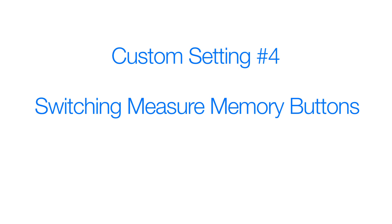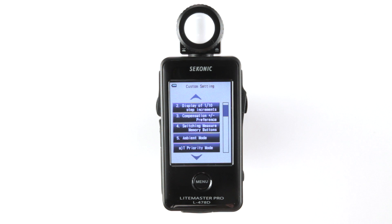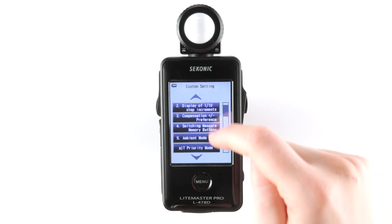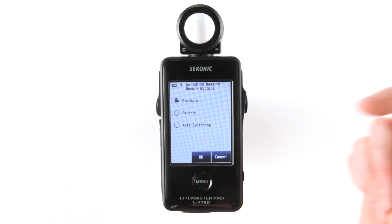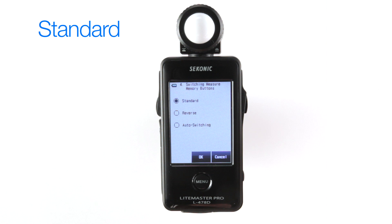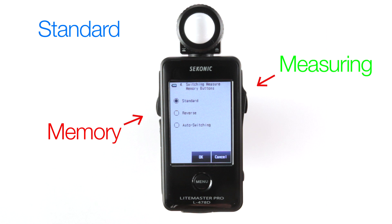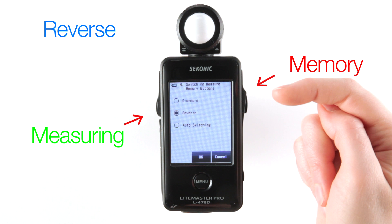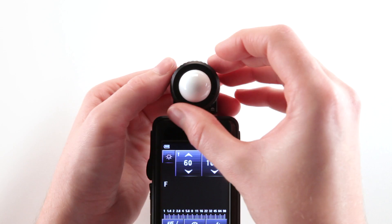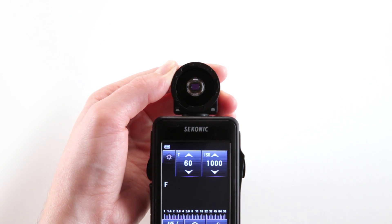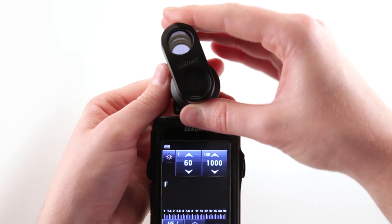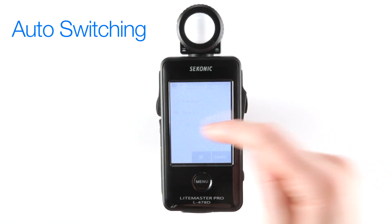Custom setting 4: switching measure and memory buttons. For better usability and comfort, you can change the function of these buttons. Standard means the right side button is the measuring button and the left side button is the memory button. Reverse means those button positions are switched. In addition, you can have the buttons switch automatically between incident and reflective modes when you select auto switching.